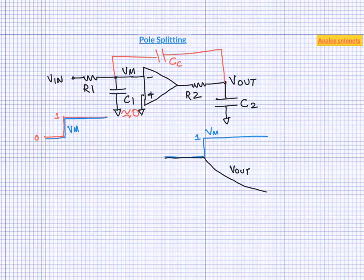What this means is that in response to a unit step, VM now does not become 1 instantly. As a result, amplifier does not see the full input in the beginning. And that results in a slower settling of the Vout.